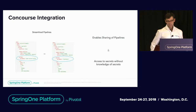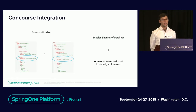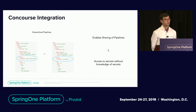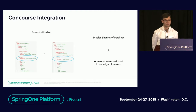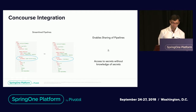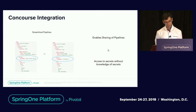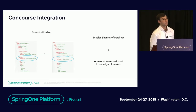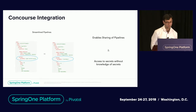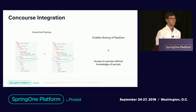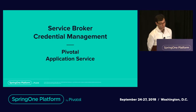What does this mean for a team using Concourse? It enables sharing of pipelines — you don't have to worry about passing around parameter files. You can just send off your pipeline. They can see the secret names if they want, go find what 'test_key' is inside of CredHub, without having to have prior knowledge of those secrets.